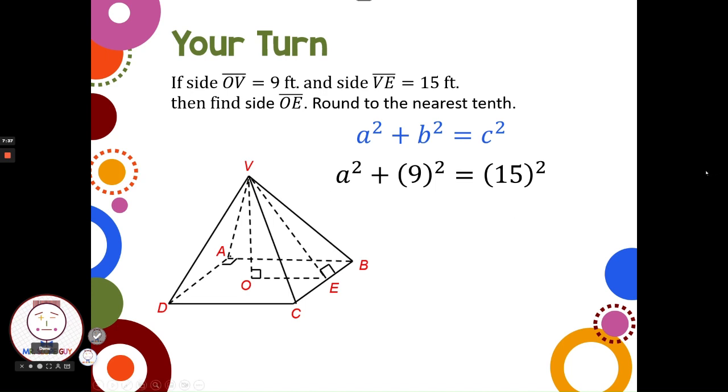9 squared is 81, 15 squared is 225. Now I just need to solve for a and subtract 81 from each side. This one I can actually do in my head. I can take the square root of 144 in my head because I know that 12 times 12 is 144. So a is 12.